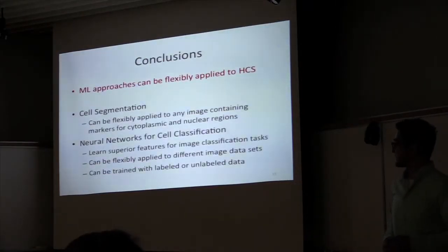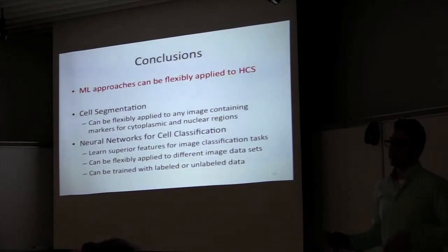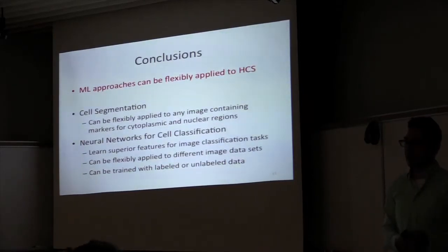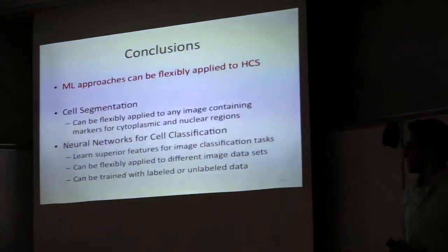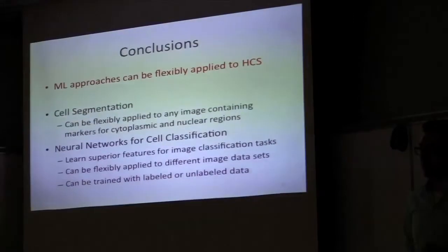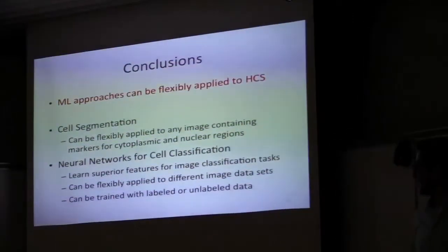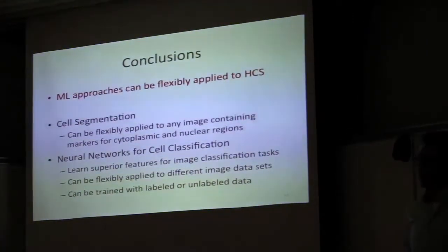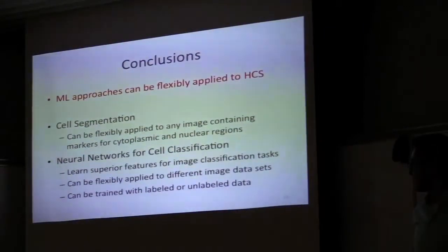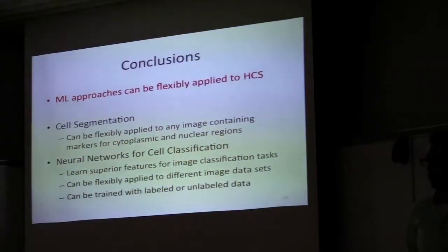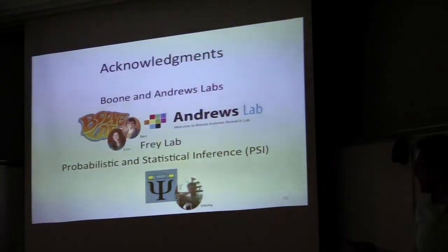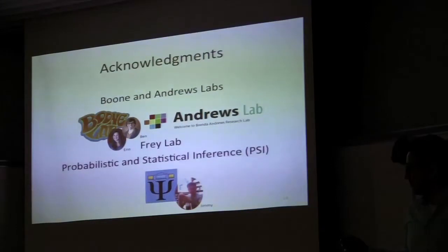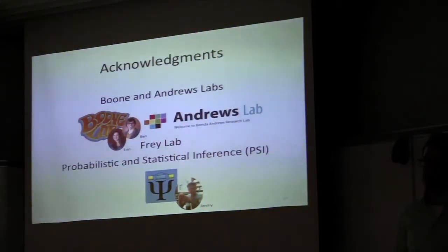The takeaway message is that these machine learning approaches can be flexibly applied to any high-content screening experiment. The segmentation can be applied to any experiment that includes markers for nuclear-type classifications, and neural network techniques are powerful for any image classification task and can be used with labeled or unlabeled data. Finally, I'd like to thank members of the Boone and Andrews labs — specifically Ben and Erin — and members of Ren and Frey's lab, specifically Jamie, who helped me implement the neural network configurations.